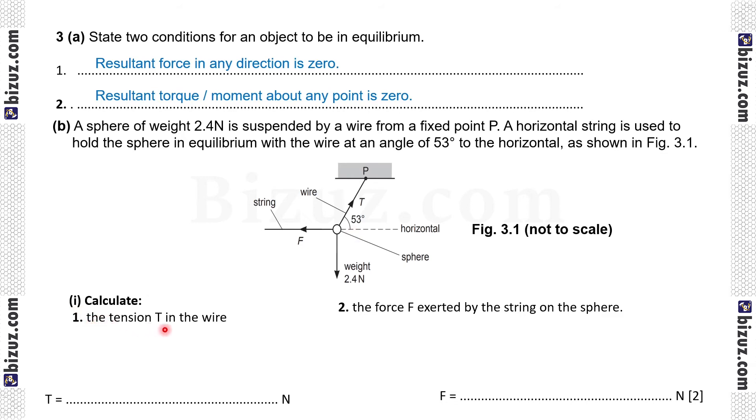3b1, calculate the tension T in the wire. If we resolve the tension T in vertical direction then we can write T sin theta, that is T sin 53 degree equals to 2.4. So T equals to 3 N. Then 2, the force is exerted by the string on the sphere. The horizontal component is T cos 53 degree which is equal to F. So T is 3, putting the values of T we can calculate it as 3 times cos 53 degree, which means 1.8. Finally it is 1.8 N.